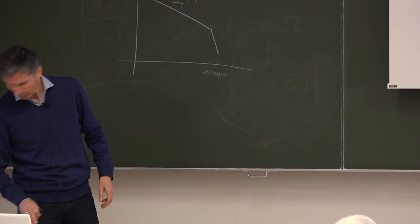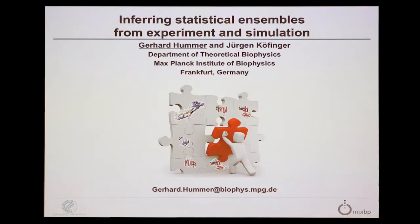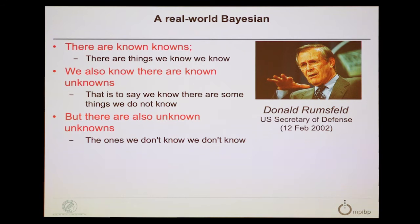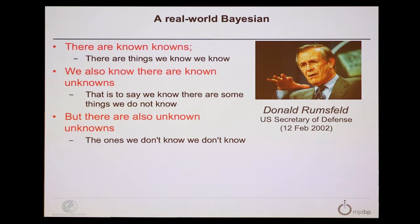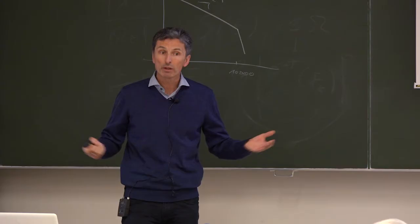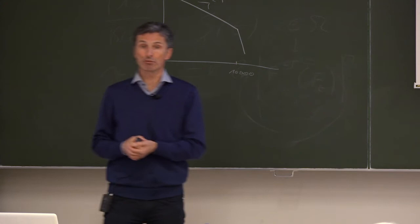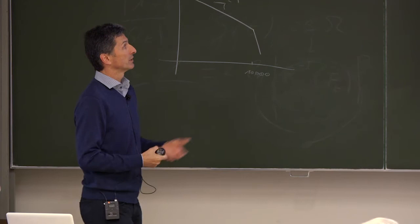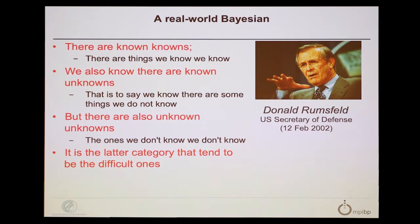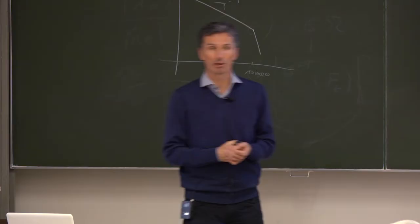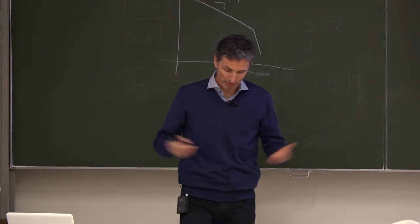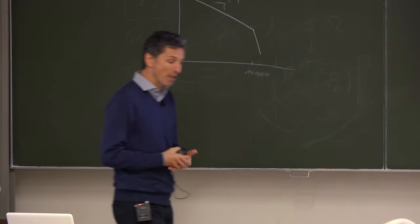Christophe and Jakob asked me to address a general audience, and what better way than to introduce the realpolitik Bayesian — pointing out the foundations of a Bayesian worldview: there are known knowns, these are the things we know we know; there are known unknowns, things we know we do not know; and then there are unknown unknowns, the ones we don't know we don't know. It is the latter category that tends to be the difficult one, and indeed the unknown unknowns give us the most trouble.